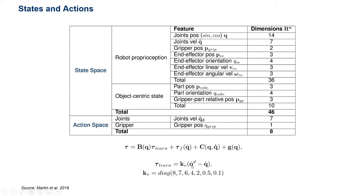The actions are interpreted as desired joint velocities and passed into the controller, which converts them into learned torques by applying fixed proportional gains, then executes them in the environment.